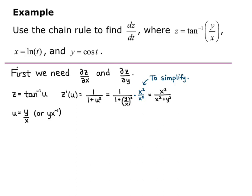Now we want to find the derivative of u. Since u is a function of two variables, we look for partial derivatives. u sub x: using u equals y times x to the negative 1 and the power rule, u sub x equals negative 1 times y times x to the negative 2, which is equivalent to negative y over x squared. For u sub y: since x to the negative 1 is a constant multiple, u sub y equals x to the negative 1, which can be written as 1 over x.